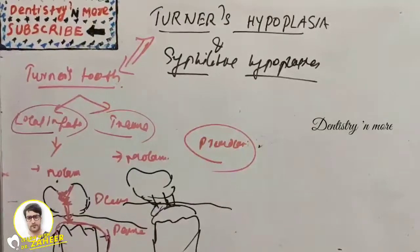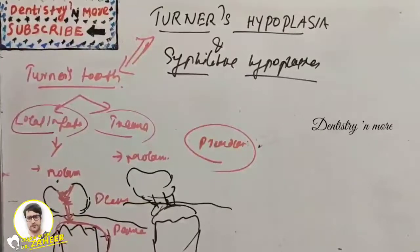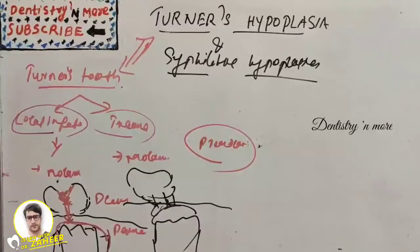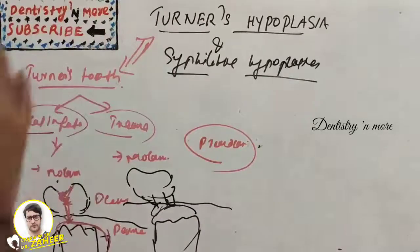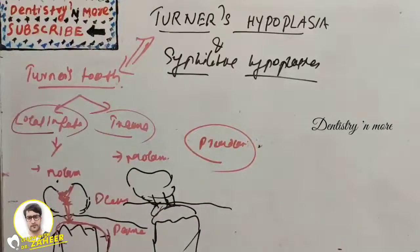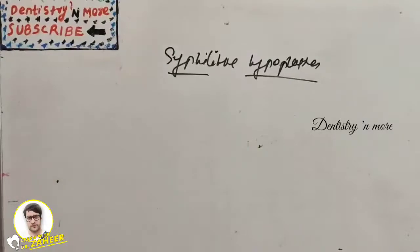The appearance of Turner's tooth ranges from mild brownish discoloration to severe pitting and irregularity of the crown. The cementum may also be stained yellowish-brown. That covers Turner's hypoplasia; now let's move on to syphilitic hypoplasia.